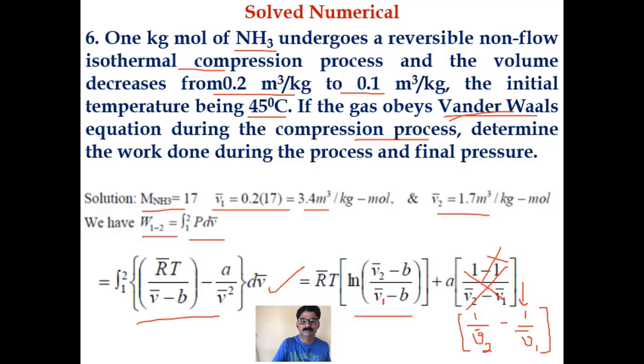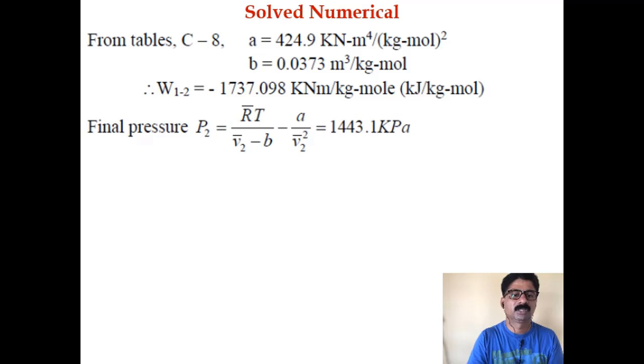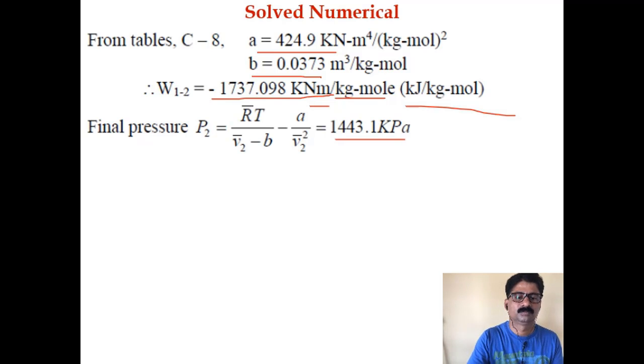From table C8, you will get the value of the constants of the Van der Waals equation. A is 424.9 and b is 0.0373. If you substitute in the expression for W1-2, you will get it as minus 1737.098 kilo-newton meter per kg-mole, which is kilojoules per kg-mole. Final pressure can be found using the Van der Waals equation. P2 equals R bar T divided by V2 bar minus b minus a by V2 bar squared. You will get it as 1443.1 kilopascals.